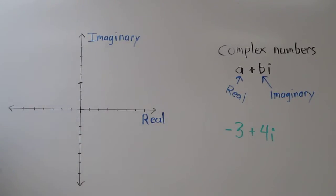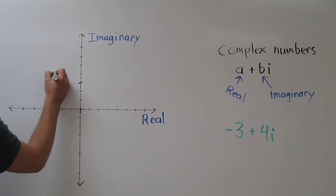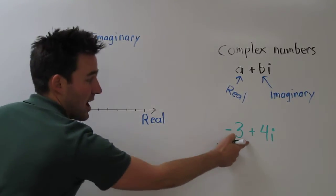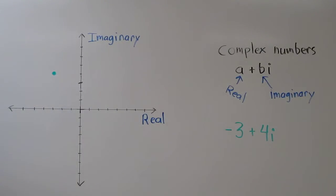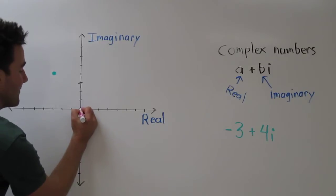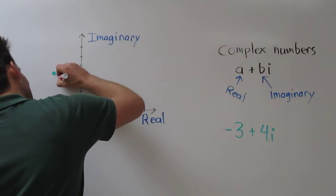Negative 3 is the real part, so we go over 3 on the real axis, and up 4 on the imaginary axis. This complex number is plotted right there. Now the absolute value of this complex number is actually the distance this point is from the origin of the complex graph.